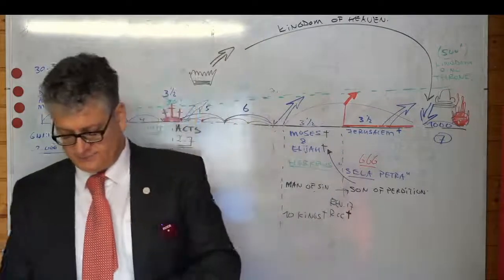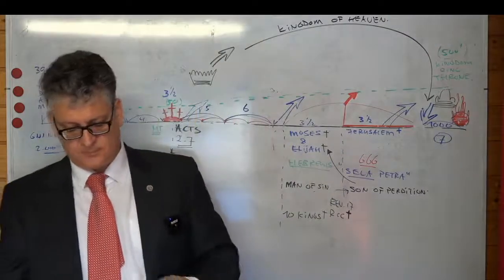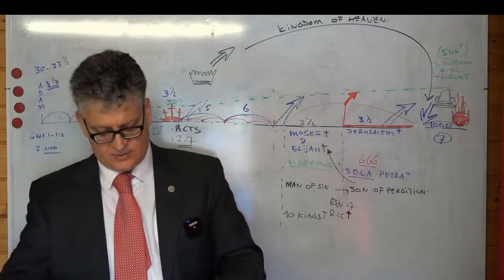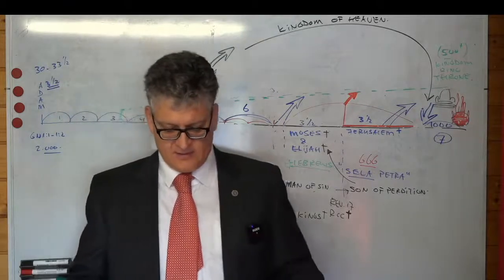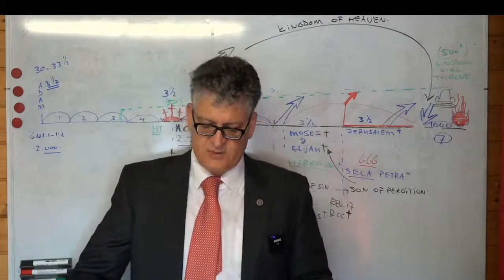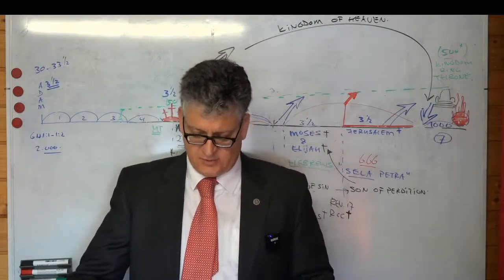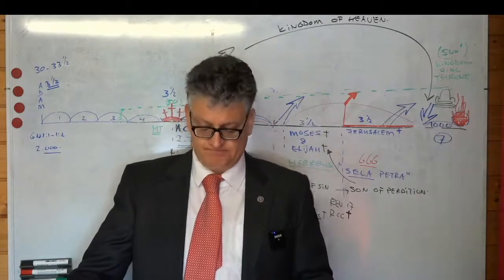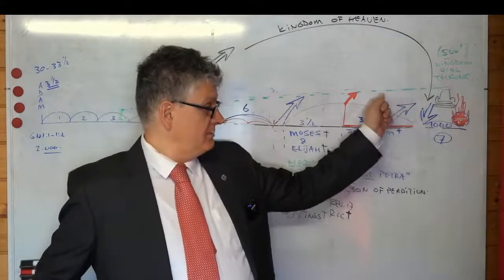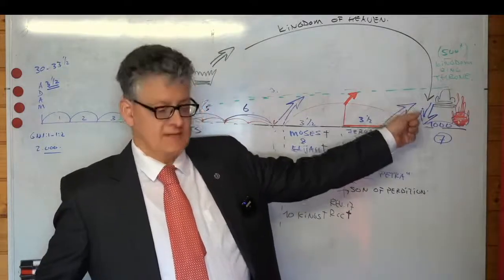This being comes from the abyss. In Revelation chapter 9, verse 11, we read that they had a king over them, which is the angel of the bottomless pit, whose name is in the Hebrew tongue Abaddon, and the Greek Apollyon, the destroyer, the terminator, and he's a king. Jesus Christ is a king, so this being is an imitator. He also will be a king.